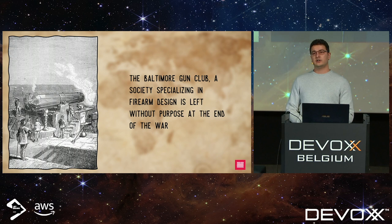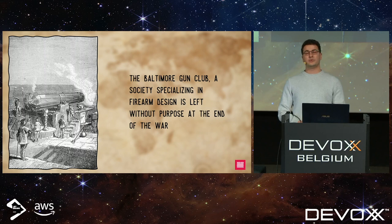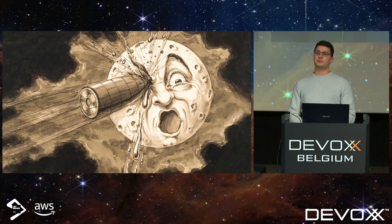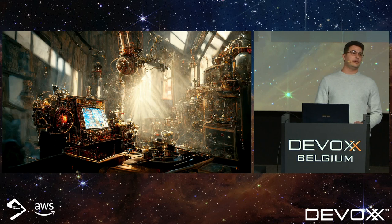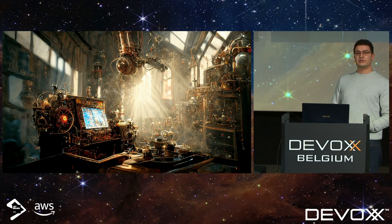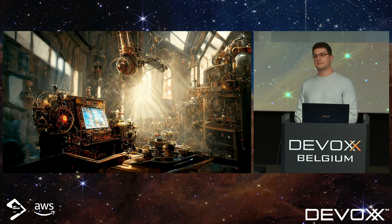When the dreaded peace finally came in 1865, the society is left without a purpose. With no one left to fire at, they need to find a new target, so they decide to aim for the moon — literally. They team up with astronomers to build a cannon capable of sending a projectile straight to the moon. You're part of a team of early software craftsmen, tasked with creating the simulation software that will allow this feat.